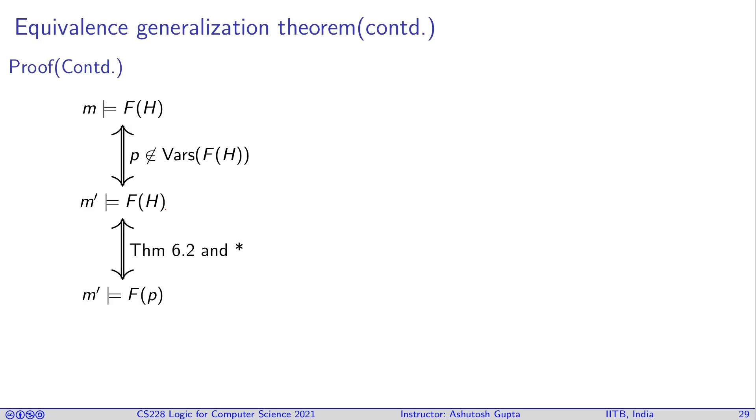Now we're going to use Theorem 6.2. Theorem 6.2 said if H and p have the same behavior—that is, m' satisfies H and m' satisfies p if and only if—then wherever you put these in, you'll have the same behavior. So m' satisfies F(H) if and only if m' satisfies F(p).